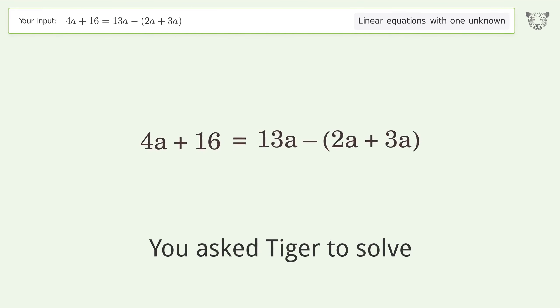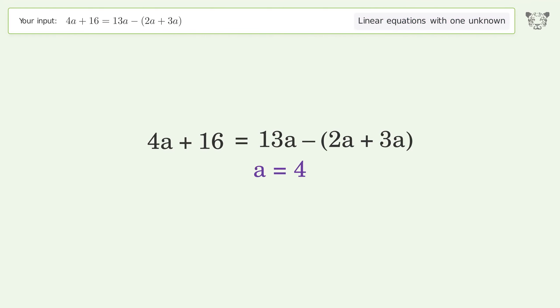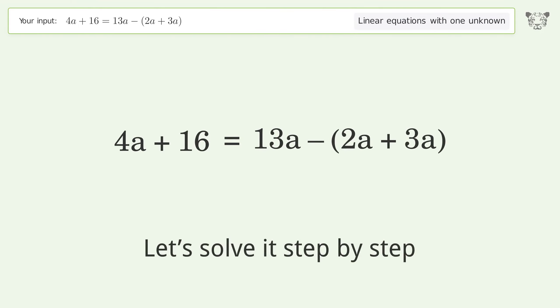You asked Tiger to solve. This deals with linear equations with one unknown. The final result is A equals 4. Let's solve it step by step.